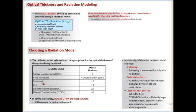Rosseland should be used when optical thickness is greater than 5, and P1 for greater than 1. If you are unable to calculate the optical thickness, you should directly go with the DO (Discrete Ordinates) or DTRM (Discrete Transfer Radiation Model). Generally, DO and DTRM are the most accurate and you can use them without any doubt. There are also other factors that can help you decide on model selection.